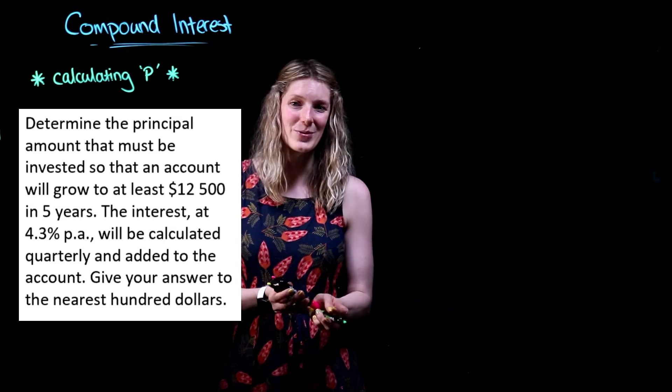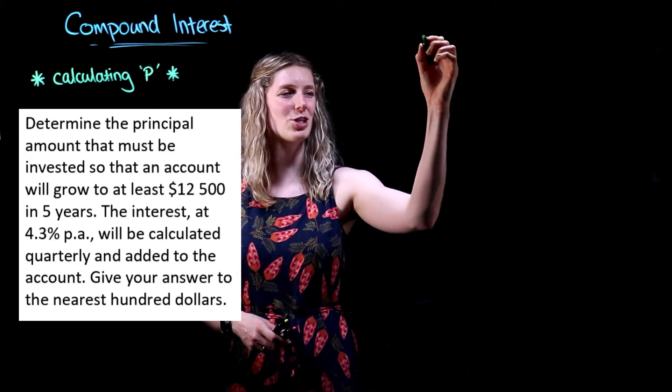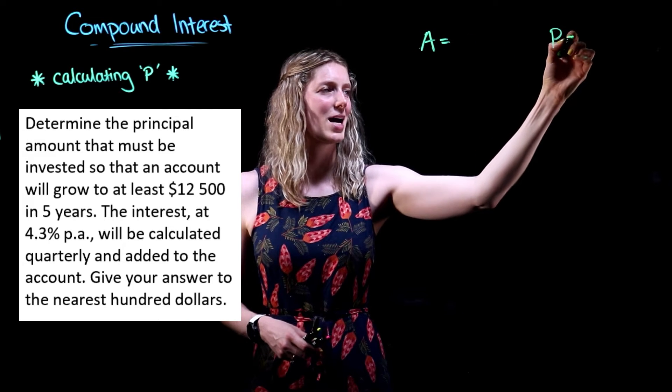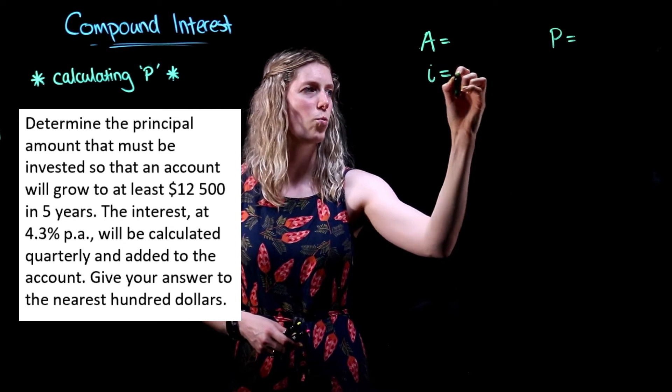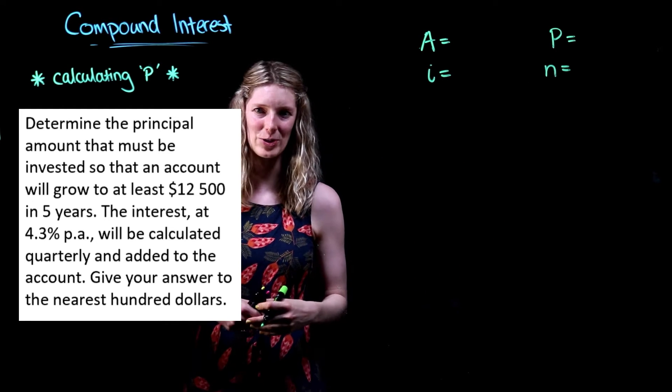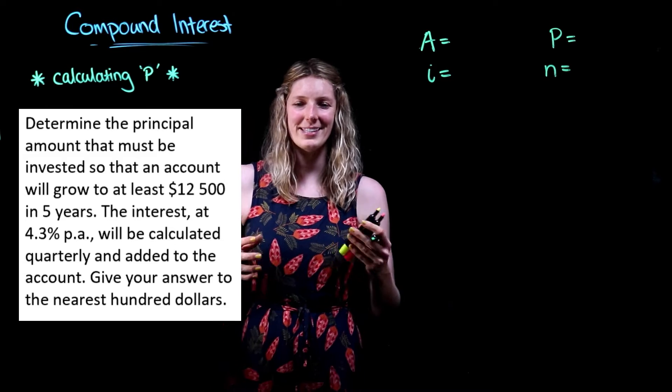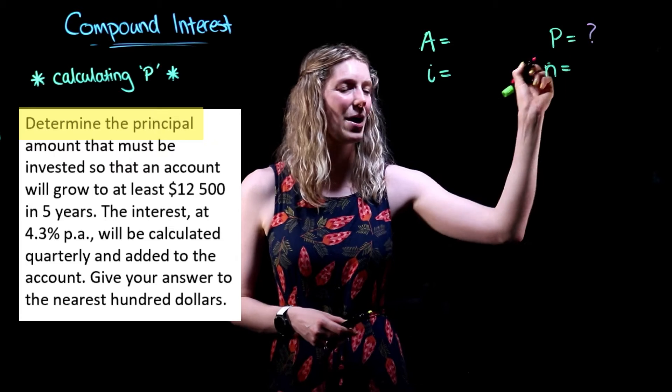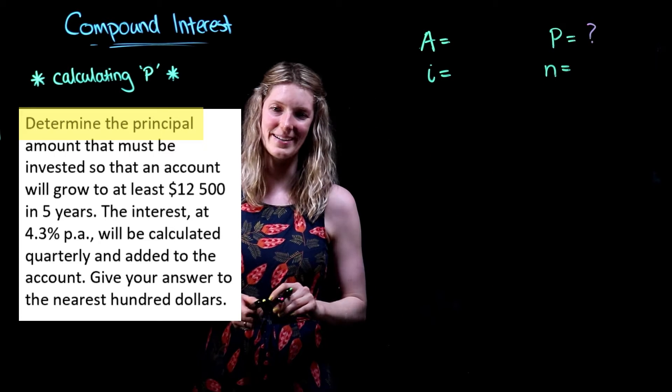So like with any financial mathematics question, it is always best that we identify which of the four variables we have at our disposal. Now the first thing we've been asked to do is determine the principal amount, so it's safe to say that our principal is going to be unknown.